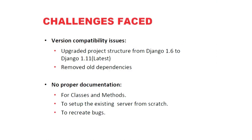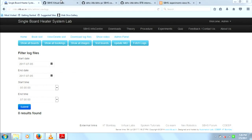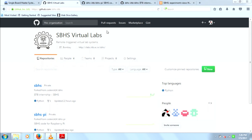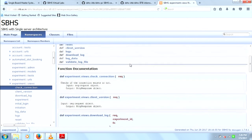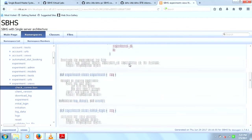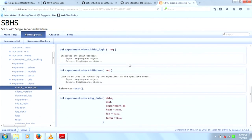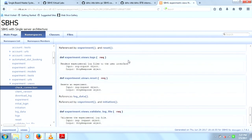A few challenges we faced: the code was initially on Django 1.6, which had many third-party dependencies including South for database interactions. We upgraded the entire project to Django 1.11. There was also no proper documentation, so for future maintainers we wrote developer documentation covering all functions, methods, and classes, which is available on the VLab site. The GitHub repository also has READMEs with all setup instructions and a setup script — you can just run the setup script and the server will be up.